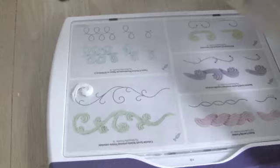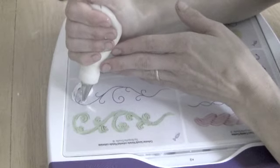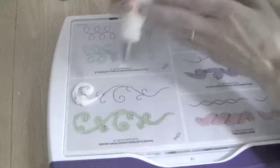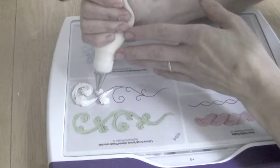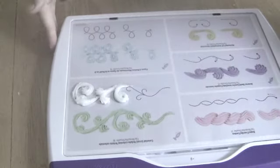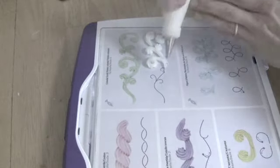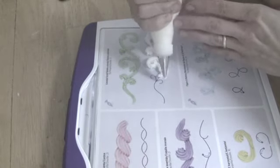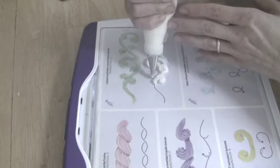So you'll just start off with the first scroll and kind of release pressure on the bag as you pull the tail out, trying to make it so that when the next scroll meets up with it, it's a consistent thickness. And this does take some practice.